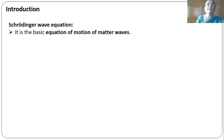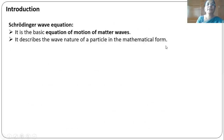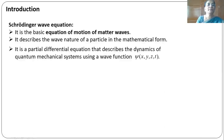Before starting the class, let us understand what is Schrödinger wave equation. It is a basic equation of motion of matter waves. Schrödinger wave equation describes the wave nature of a particle in a mathematical form. It is a partial differential equation that describes the dynamics of quantum mechanical systems using a wave function psi of x, y, z and t.